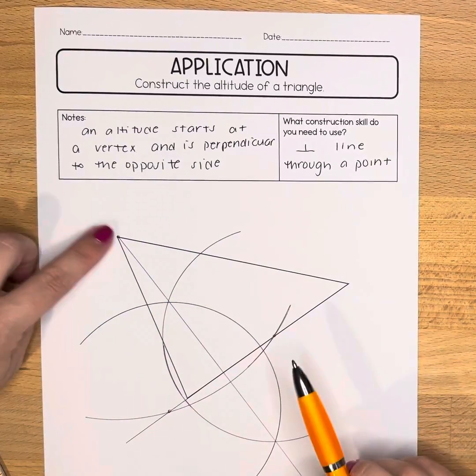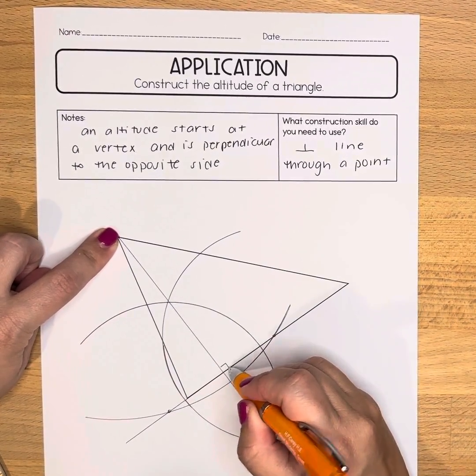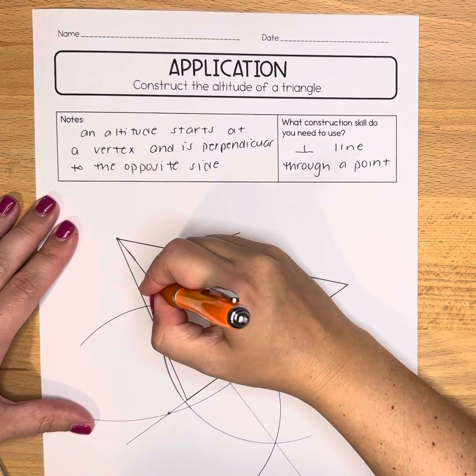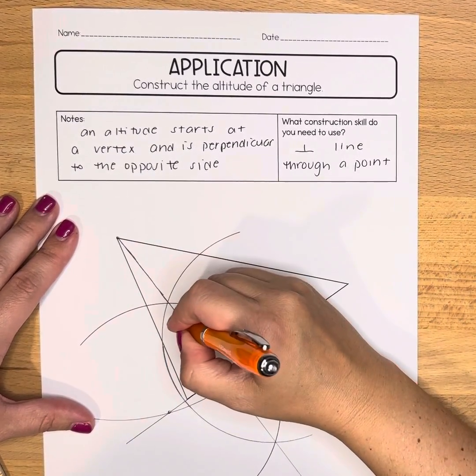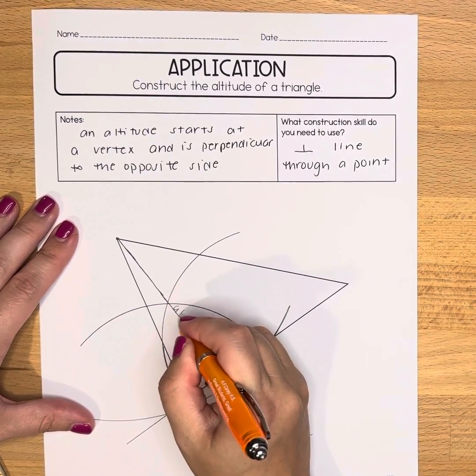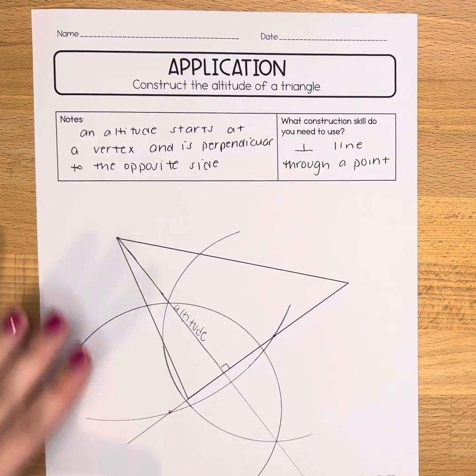You can see that the altitude starts at a vertex and is perpendicular to the opposite side. This piece that I'm kind of bolding over right here, that is basically the altitude of the triangle.